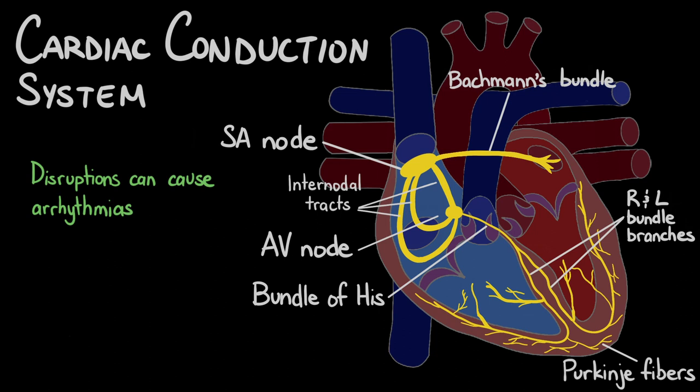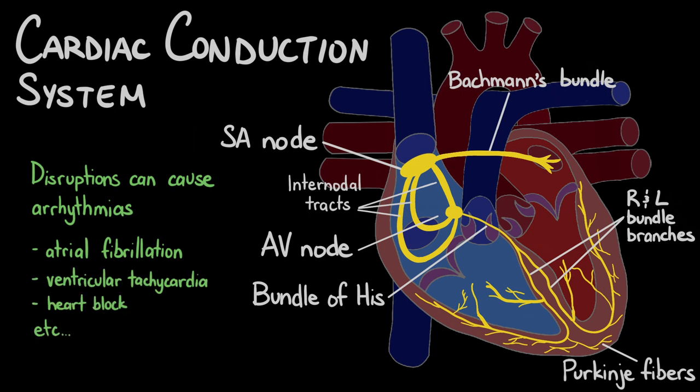Common arrhythmias include atrial fibrillation, ventricular tachycardia, and heart block, among others. Treatment options for arrhythmias can range from medication to surgical procedures such as pacemaker implantation or ablation therapy.